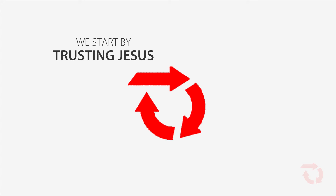The three arrows represent the three foundation truths that we teach. The first one is: we start by trusting Jesus. Students along this arrow are figuring out who Jesus is — these are students who aren't Christians, or students where you're not sure where they're at. What do they need the most? They need a relationship with Jesus Christ — to accept Him as their Savior and accept the forgiveness of sins. Your goal with these students is for them to put their faith in Jesus and get baptized.